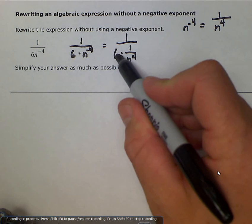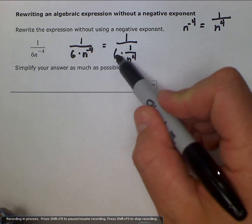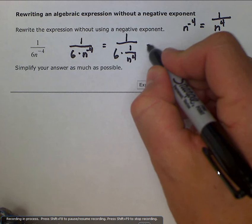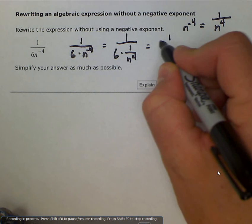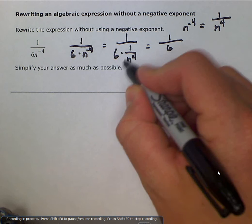6 is the same thing as 6 over 1, or if you want to leave it as a whole number, the whole number gets multiplied by the numerator. So this is the equivalent of 1 over 6 times 1 is 6, and then the denominator stays the same.